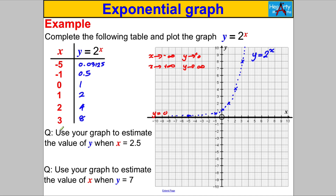We're also asked to use the graph to estimate y when x = 2.5. Drawing the vertical line x = 2.5, we can read off that y is just a little bit over 5. We're also asked to estimate x when y = 7. Drawing the horizontal line y = 7 and reading across, x is approximately 2.9.